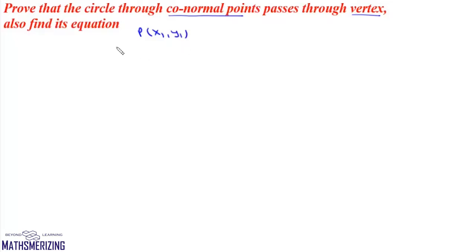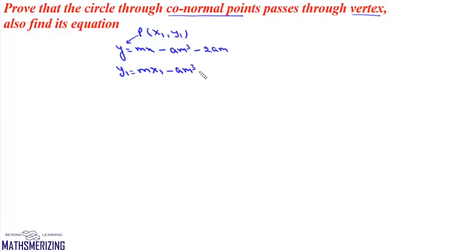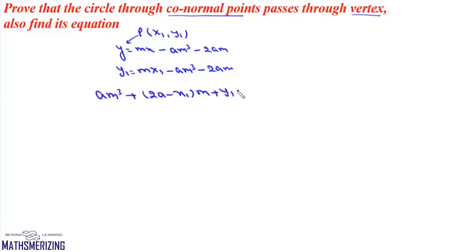The equation of the normal to the parabola is y = mx − am³ − 2am. This normal passes through the point (x1, y1), so we can write y1 = mx1 − am³ − 2am. We can rewrite this as a cubic equation in m: am³ + (2a − x1)m + y1 = 0.